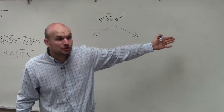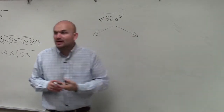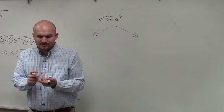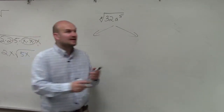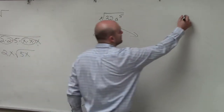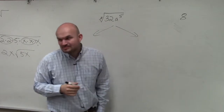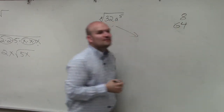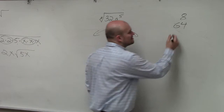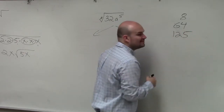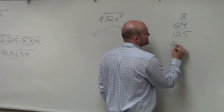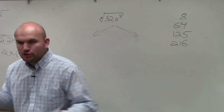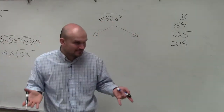So I will give you the cubed numbers — what number multiplied by itself three times gives you a result. The main ones: 2 times 2 times 2 is 8; 4 times 4 times 4 is 64; 5 times 5 times 5 is 125; and 6 times 6 times 6 is 216. Those are the main cube numbers you're going to be using.